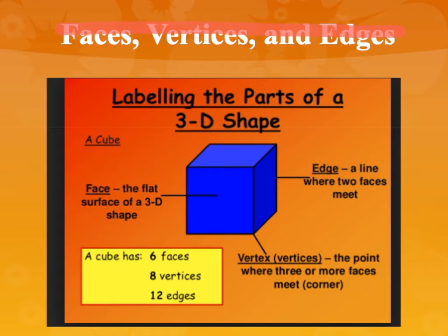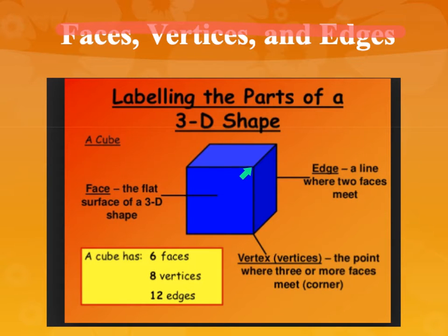And then finally we have the vertex or the vertices. We already knew what vertices were because we talked about that when we talked about triangles. But vertices are the point where three or more faces meet at a corner. A vertex would be like this little point right here, or this little point up here, where three of those lines meet at a corner. This shape has eight vertices.